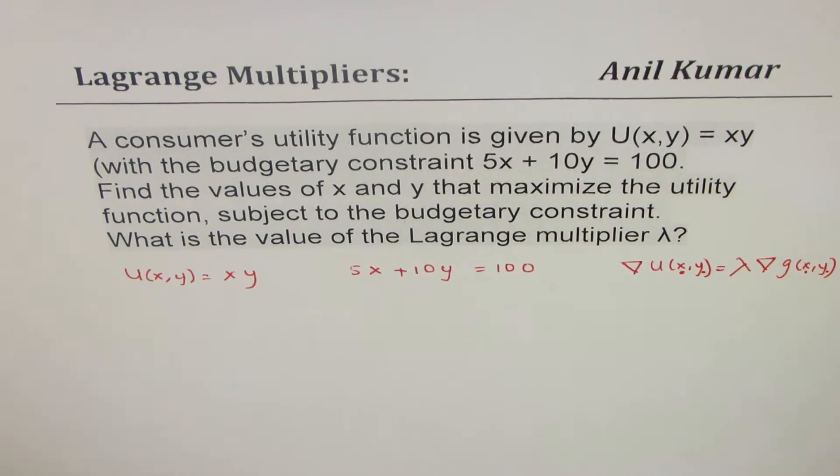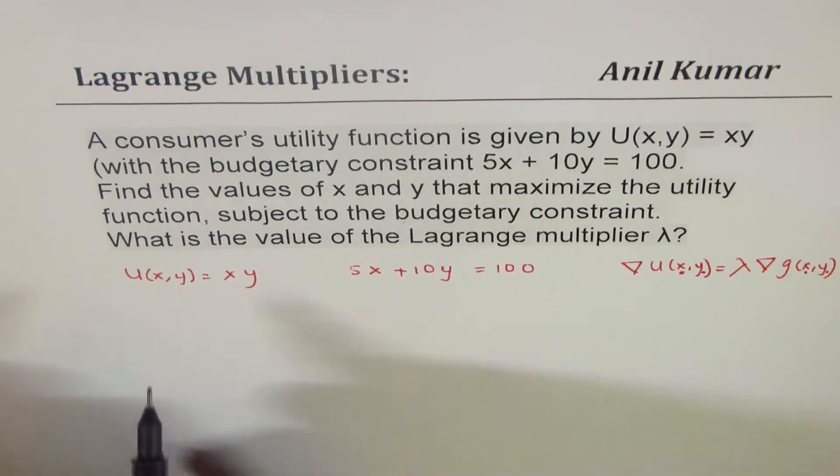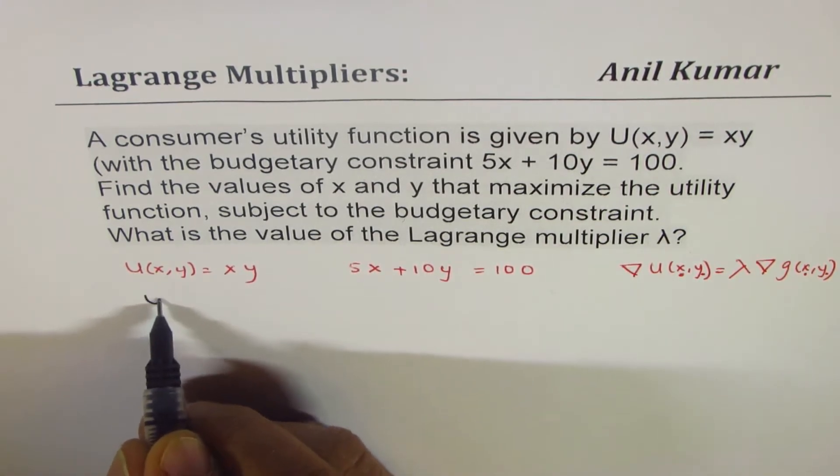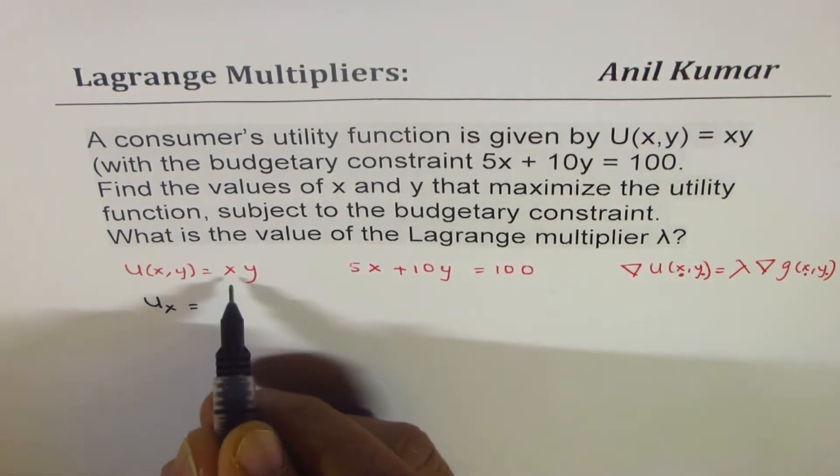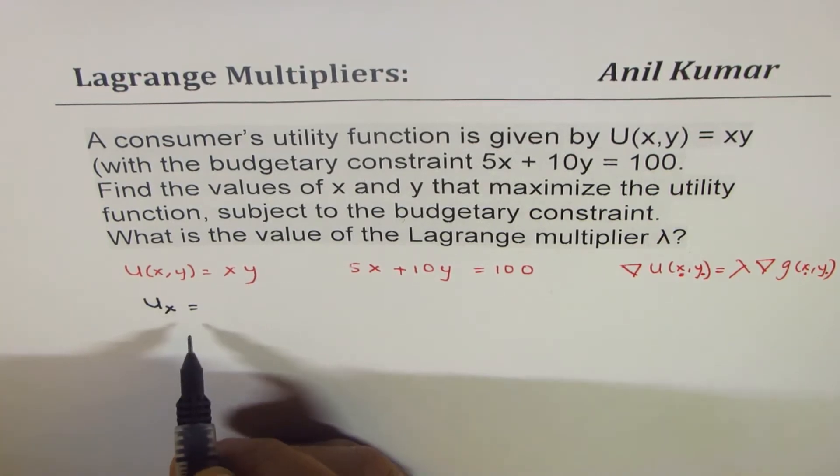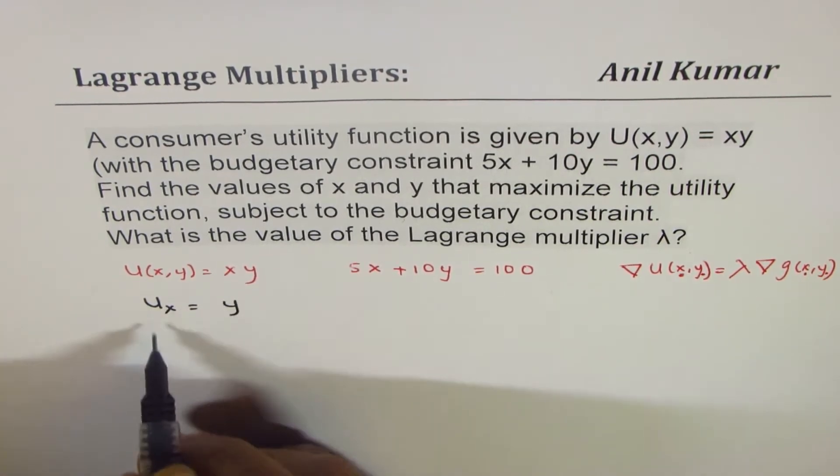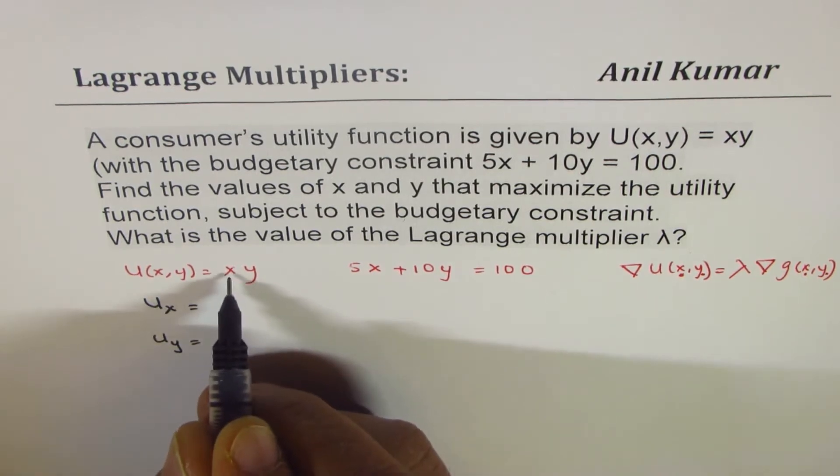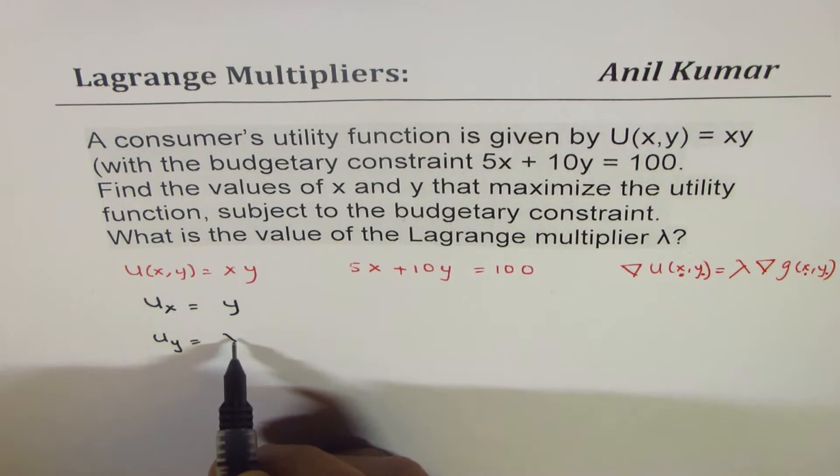Now, to find the gradient, what we can do is we can find the partial derivatives. So partial derivative with respect to x for this particular utility function will be equal to y. Partial derivative with respect to y will be x.